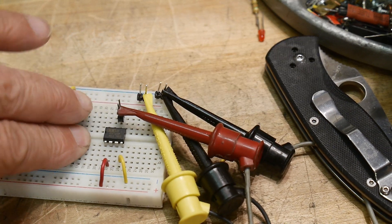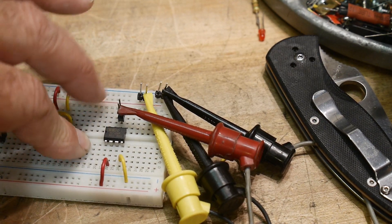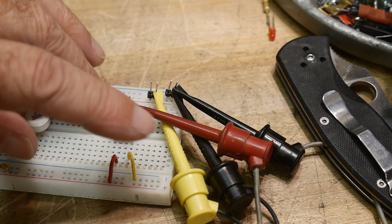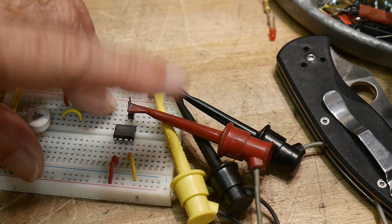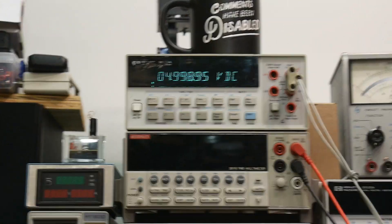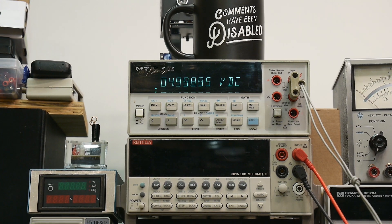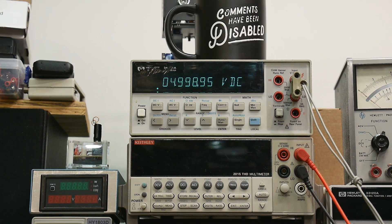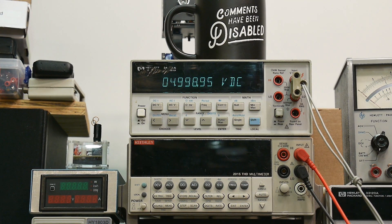These are a different type, so we'll go through these first, these are the REF02s, and then we'll go through the second. Here's our circuit. Just three pins: pin two is VCC, pin four is ground, and pin six is the output. So like a three terminal regulator, and it's supposed to be four volts. Let's see how it does.